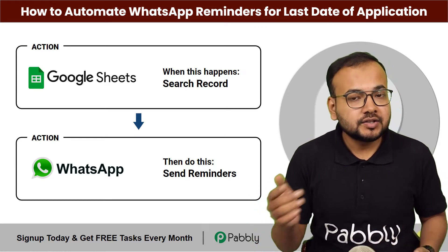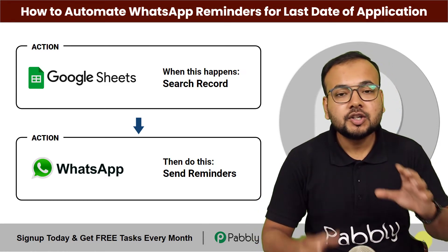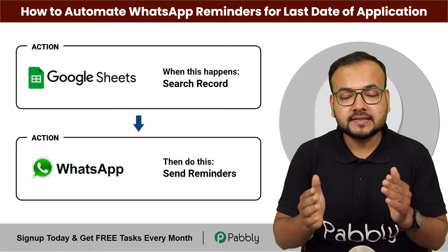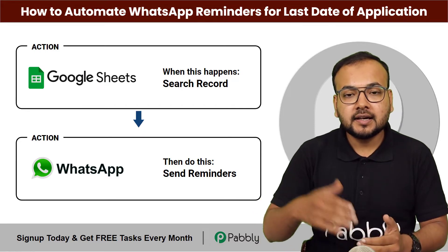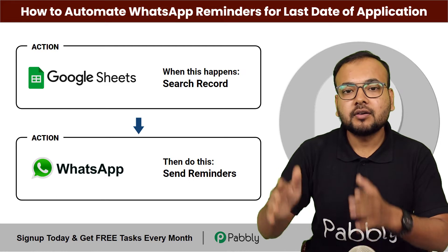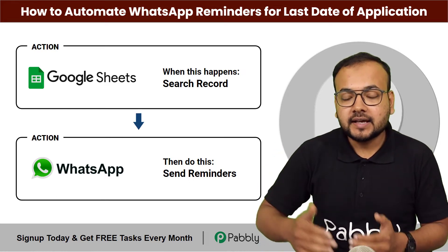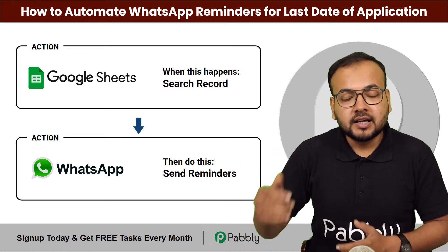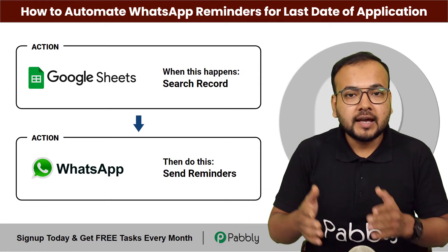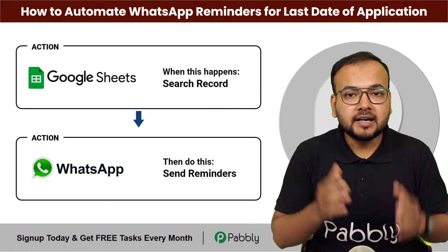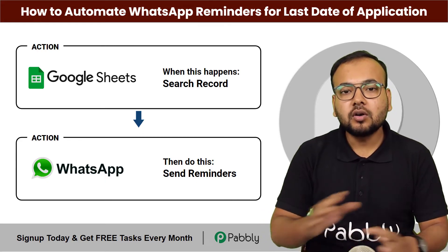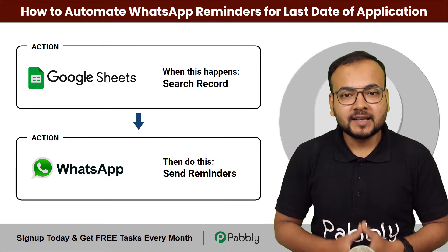If you want to send reminders about the last date of any application, this automation is for you. You just have to create a spreadsheet with the details of the upcoming exam and its last date, and in another sheet add the records of your students and their contact details. According to their exam application status, the workflow will search for students whose applications are pending and send reminder messages automatically to their WhatsApp.